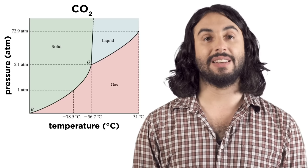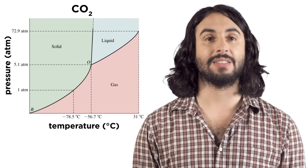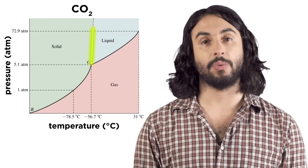For carbon dioxide, it is the liquid form that is less dense, so the line slants up and right.